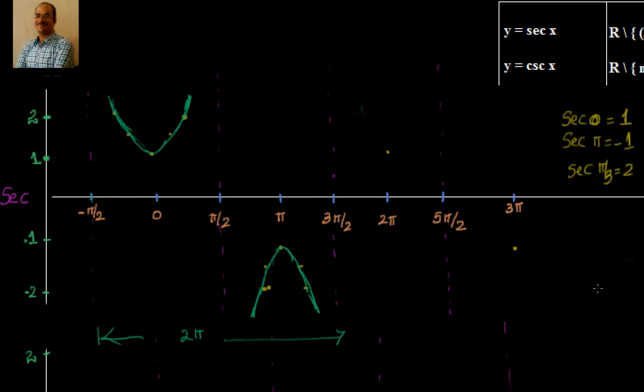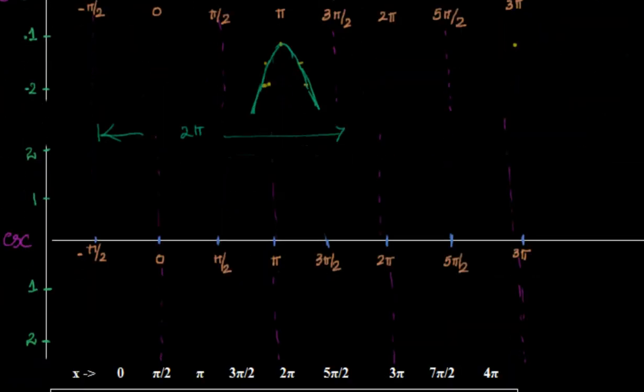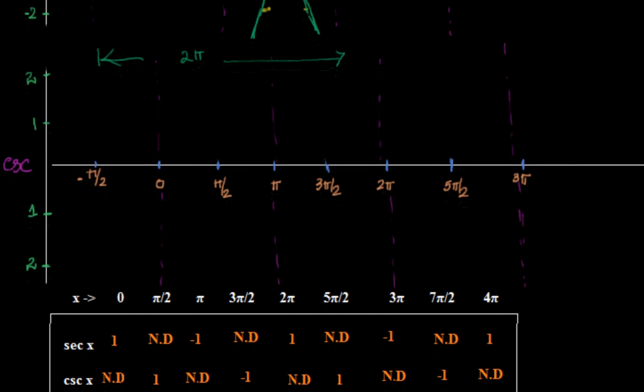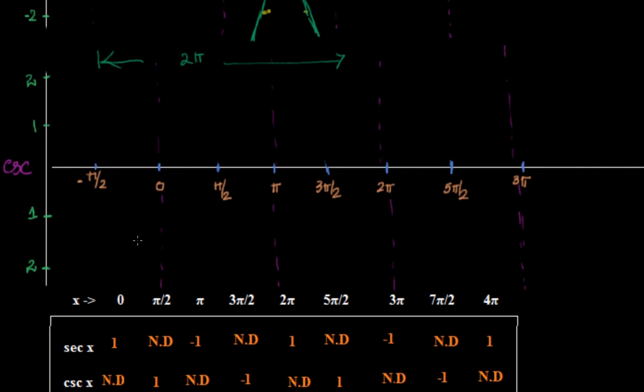Now let's go to the cosecant and see how this looks like. In the cosecant, first let's start with what we know. We know that sine of 90 is 1. So cosecant of π/2 is equal to 1. 3π/2 is minus 1. So I know that cosecant of π/2 is equal to 1.